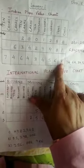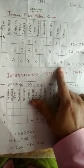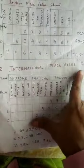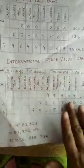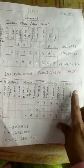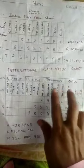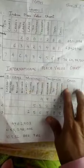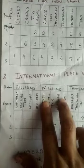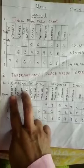Now we will understand this using the international place value chart. In the international place value chart, the periods are divided into three places each: ones, thousands, millions, and billions — each divided into three places.